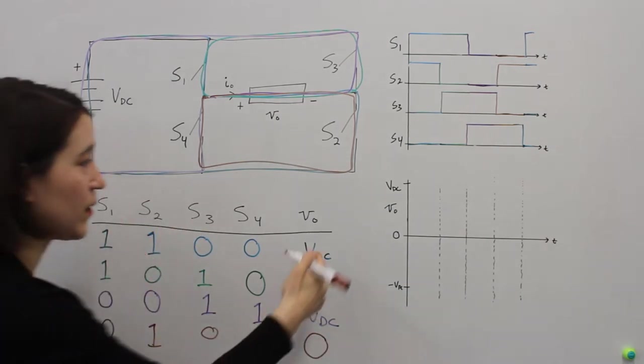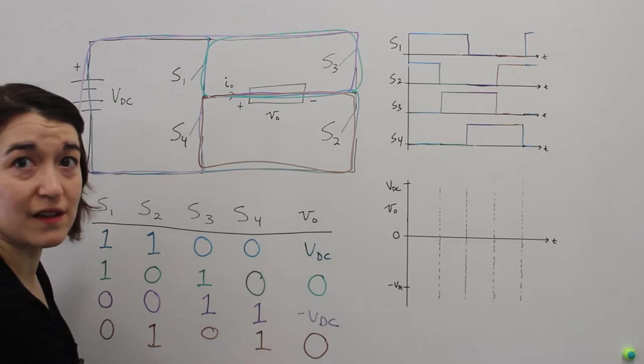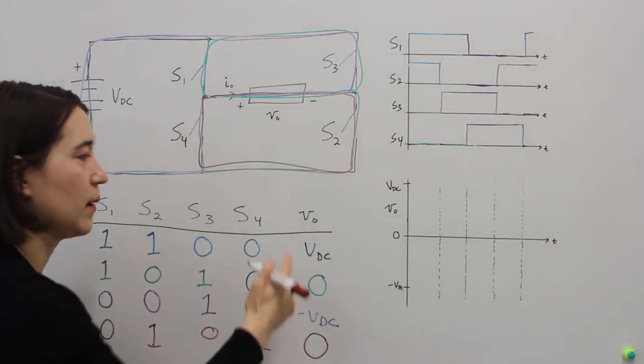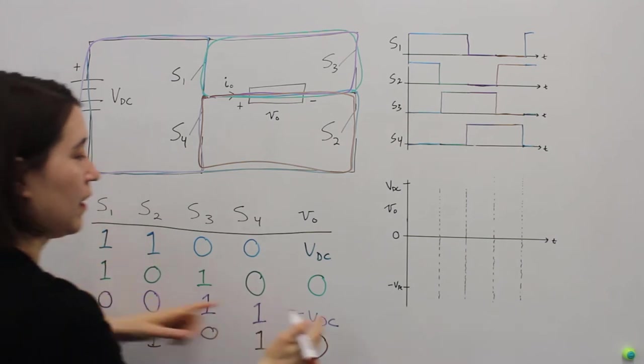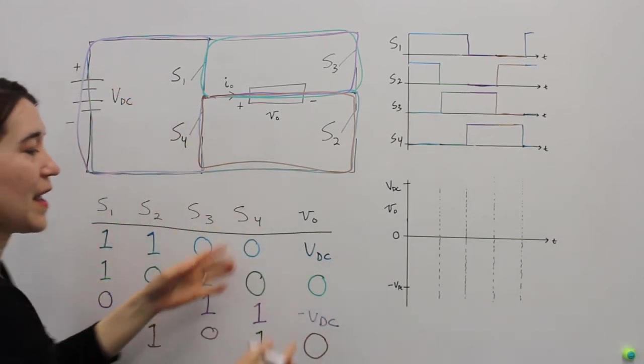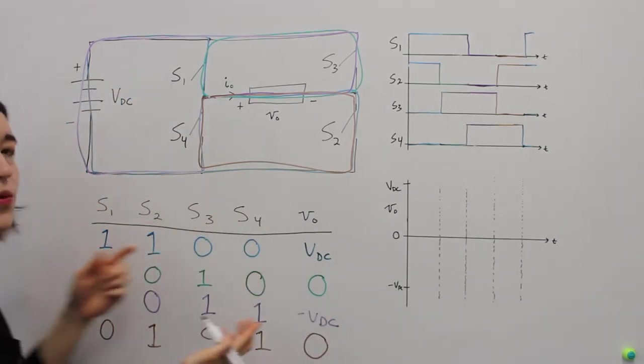With these switching states, we see here three different voltages that we can put over the output. Positive VDC, the full voltage here. Negative VDC, full negative. And 0. And two different states will both give us 0.